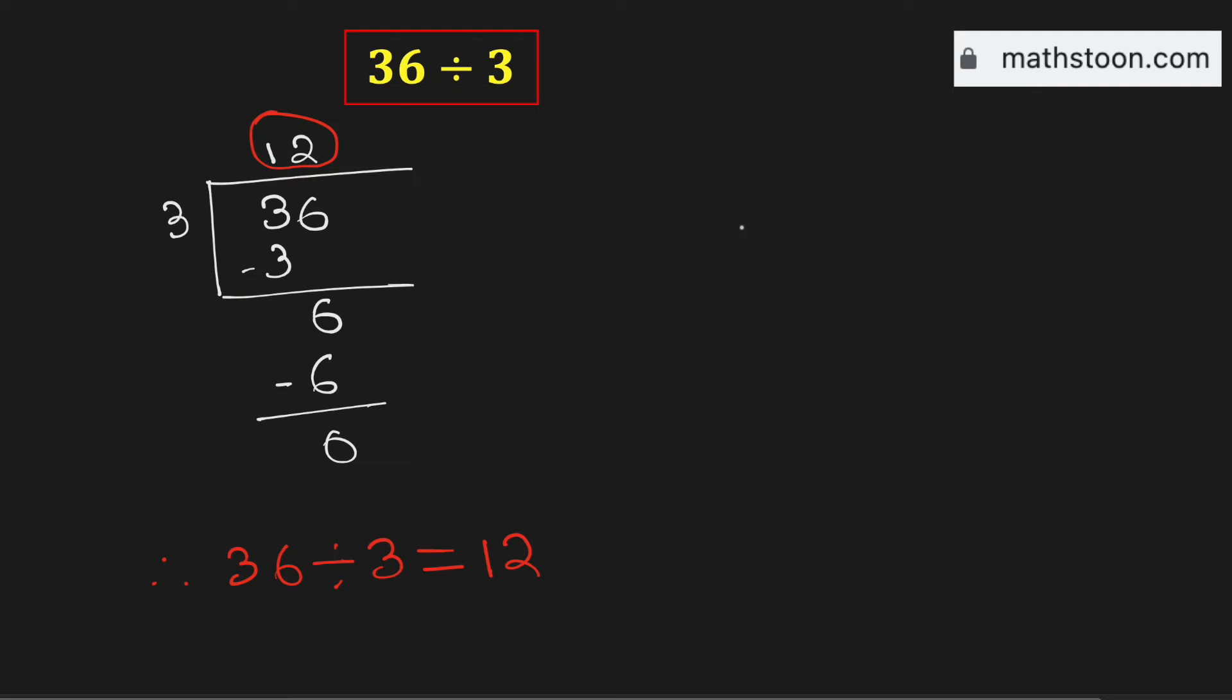Now we can get this using another method. We know that 36 divided by 3 can be written as a fraction 36 over 3. Now we will write 36 as 3 times 12. And we have 3 in the denominator.